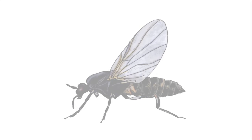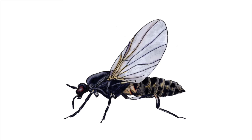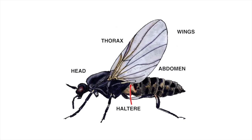The Anatomy of the Blackfly. Blackflies have small, robust bodies with a humped back. Blackflies are divided into the head, thorax, and abdomen. Blackflies have a set of wings on their thorax. As well, they have halters, which are responsible for balance in flight.